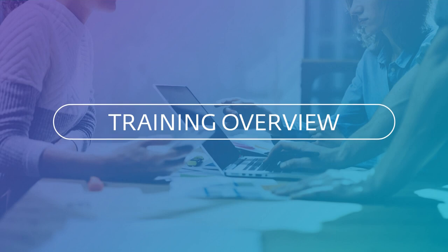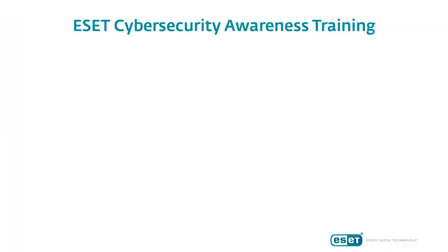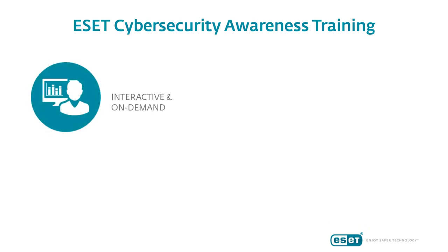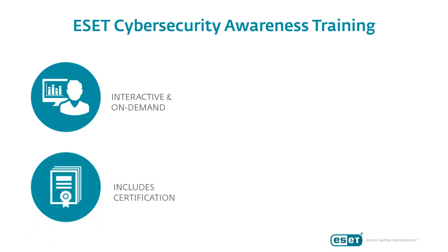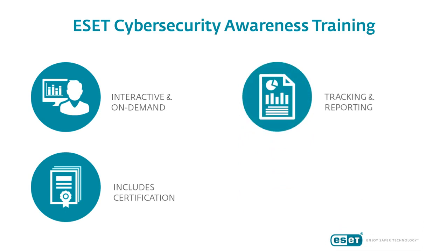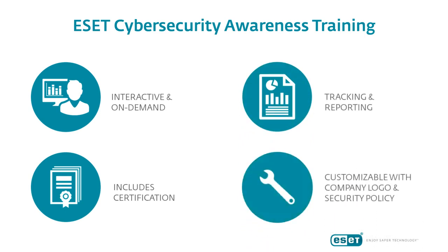Let's start with the training overview to go over just exactly what you'll get in this training. ESET Cybersecurity Awareness Training is interactive and on-demand. Your users can take it from anywhere with an internet connection. It includes certification — after users pass an exam, they get a certificate of completion. As an admin, you're also able to track and report the status of your users, and you can customize the training with your company logo and your security policy, if you'd like to include that in the curriculum.